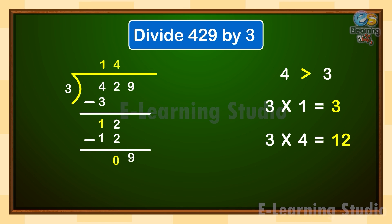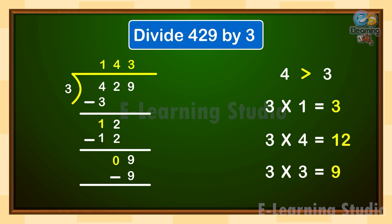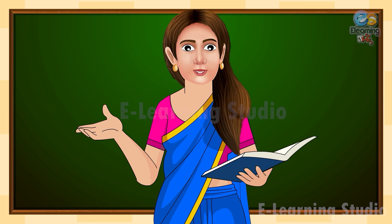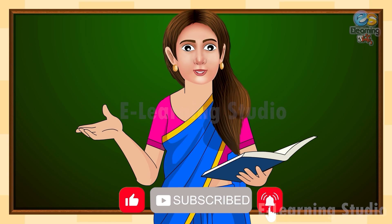Bring down the next digit of the dividend, so the new dividend is 9. 3 goes into 9 three times. Write 3 as the next digit of the quotient. Write the product — 3 and 3 are 9 — below 9 and subtract to get 0. So, 429 divided by 3 is equal to 143. Hope this is clear to all. Thank you and happy learning.